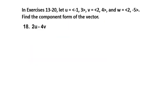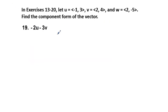Problem 19: -2u minus 3v. We're going to put -2 times u, where u is <-1, 3>, minus 3 times v, which is <2, 4>.